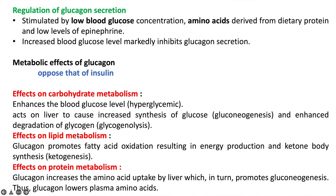On lipid metabolism, glucagon promotes fatty acid oxidation, which results in energy production, and also performs ketone body synthesis, called ketogenesis. Regarding protein metabolism, glucagon increases uptake of amino acids by the liver, which in turn promotes gluconeogenesis, and thus glucagon lowers plasma amino acid levels.